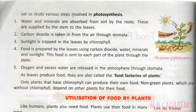Food is prepared by the leaves using carbon dioxide, water, minerals and sunlight. This food is then sent to each part of the plant through the stem.